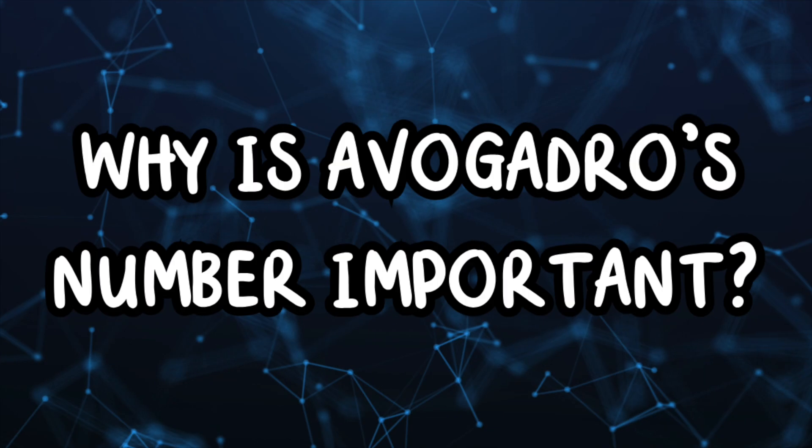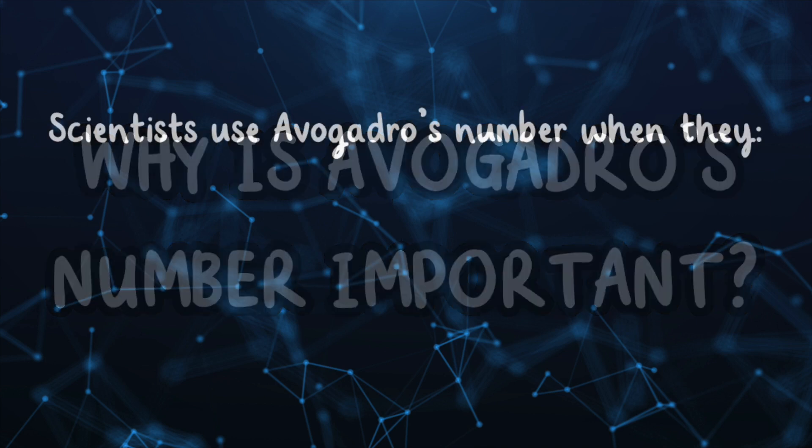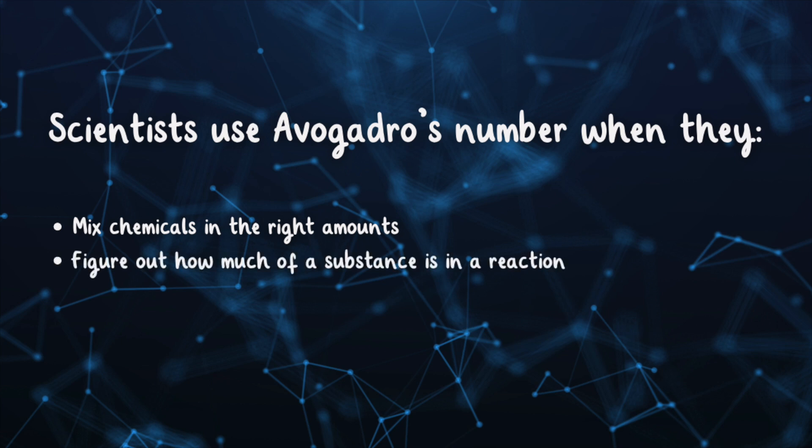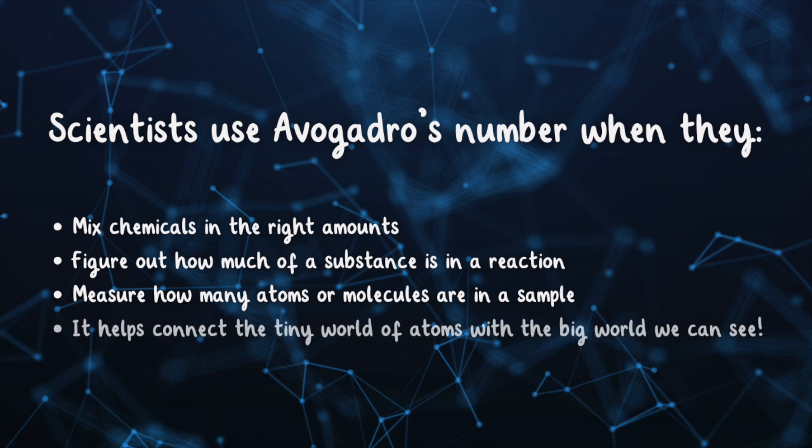Why is Avogadro's number important? Scientists use Avogadro's number when they mix chemicals in the right amounts, figure out how much of a substance is in a reaction, measure how many atoms or molecules are in a sample, and it helps connect the tiny world of atoms with the big world we can see.